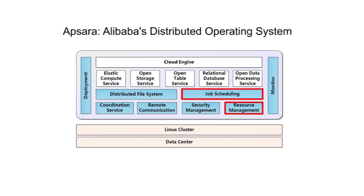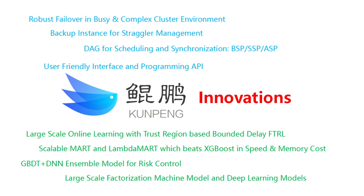Kun Peng is built based on APSARA, which is Alibaba's own large-scale distributed operating system, and has been used both inside Alibaba and also on Alibaba Cloud for millions of outside companies.